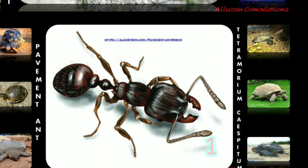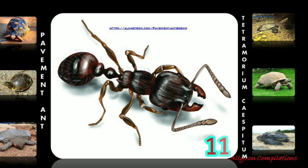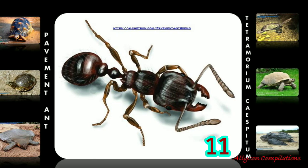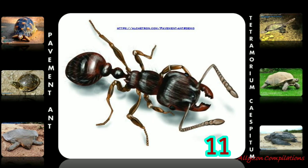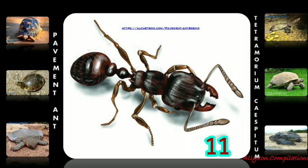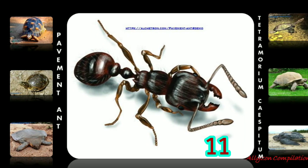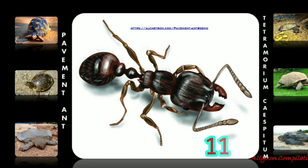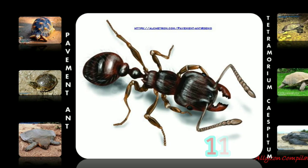Pavement ants, also known as the sugar ant in parts of North America, are ants native to Europe which also occur as an introduced pest in North America. Their common name comes from the fact that colonies in North America usually make their nests under pavement. Pavement ants have polygyne colonies, meaning more than one queen, so their colonies can grow very quickly and very large since there is more than one egg layer.